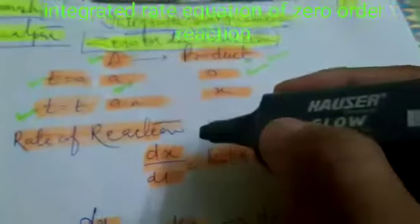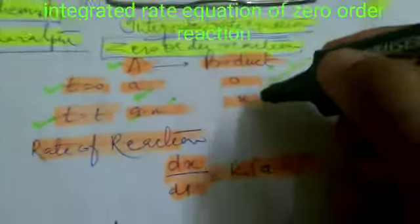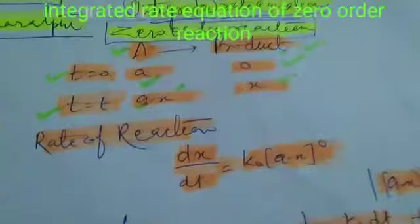At T equal to T, X molecules out of A are dissociated and product is formed equal to X.